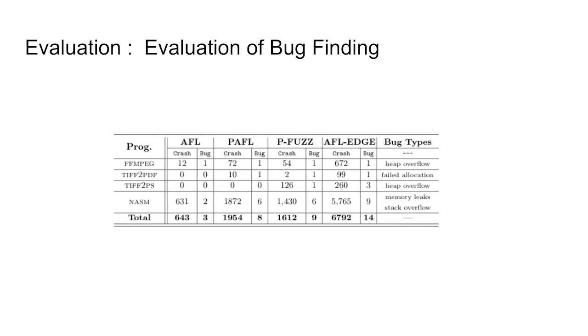In the course of the evaluation, the fuzzing tools also triggered many crashes. As shown in this table, we can see AFL-EDGE triggered 6,792 unique crashes and 14 previously unknown bugs, outperforming both PFAS and PAFL. Moreover, all the bugs detected by PAFL and PFAS are also detected by our solution.